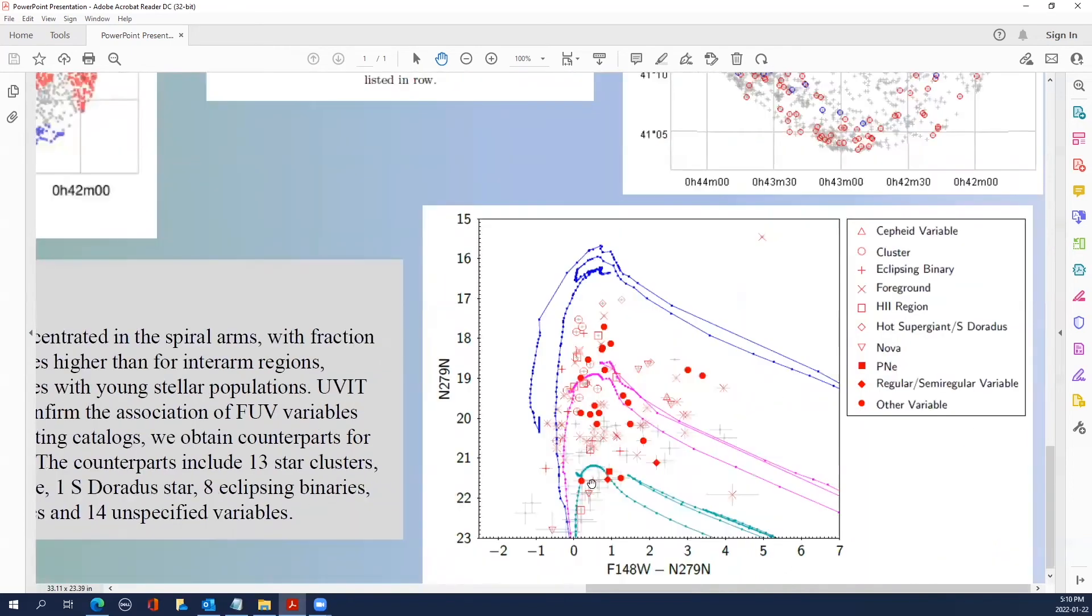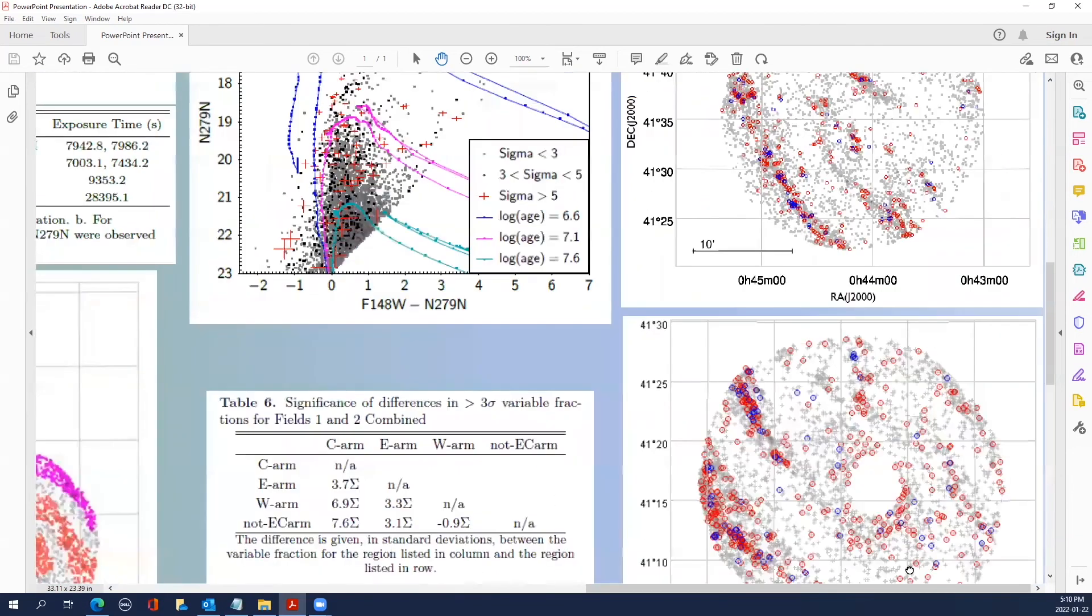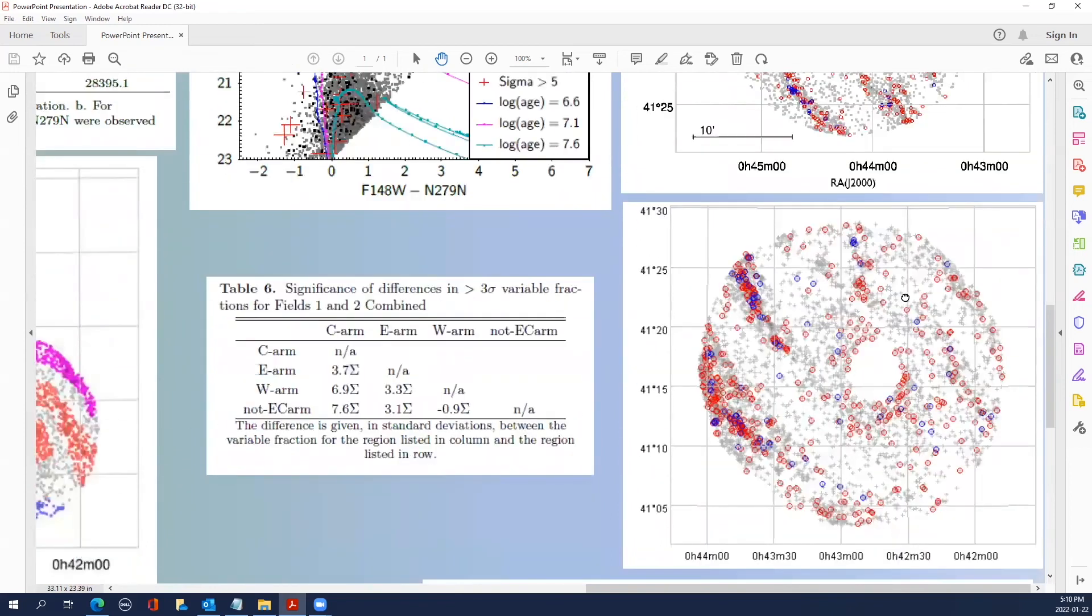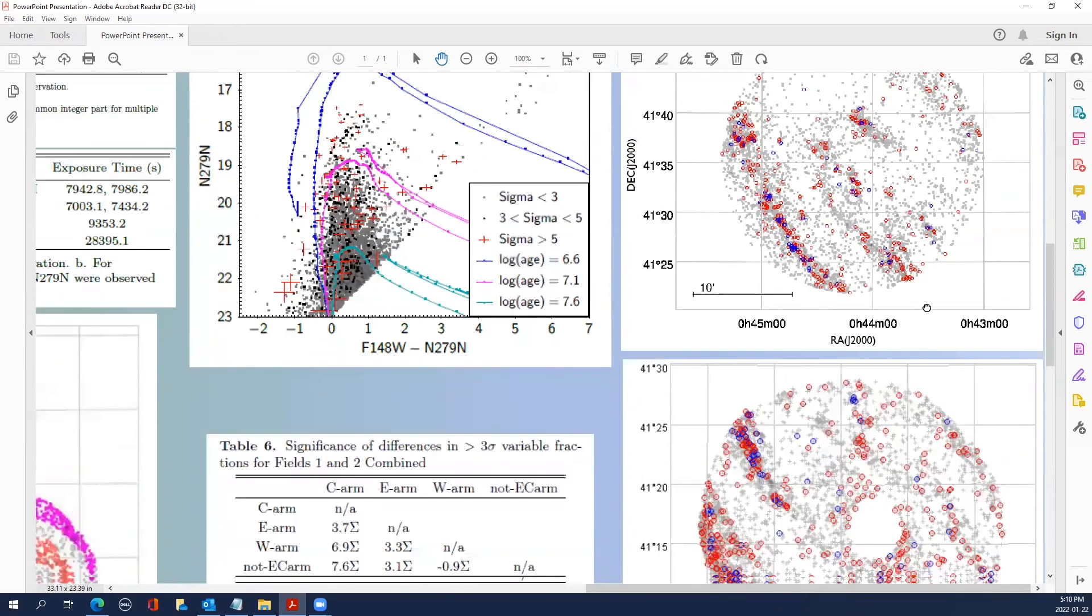We next identified these stars using various catalogues, including Gaia. We know the counterparts of 60 of these. The last bit of the analysis was a spatial analysis. We could show that in both the bulge field and the northeast field, there are fractionally more variables compared to non-variables in the spiral arms than in the inter-arm regions.